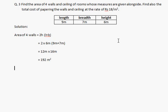Now, area of ceiling is equal to length times breadth, which equals 9 meters times 7 meters, equals 63 square meters.